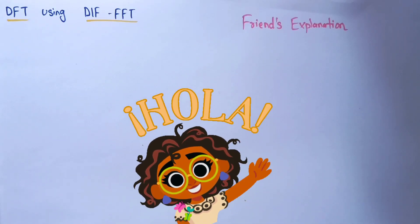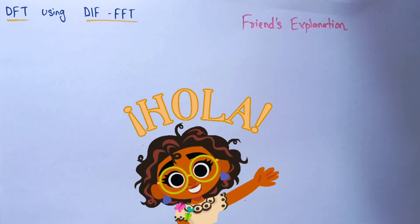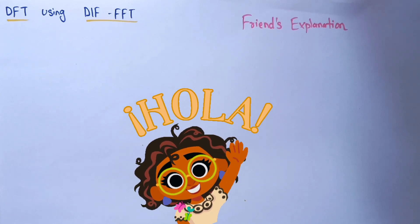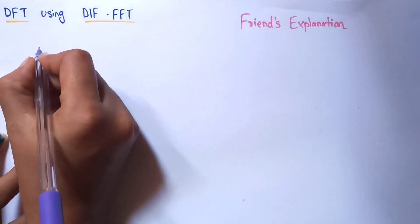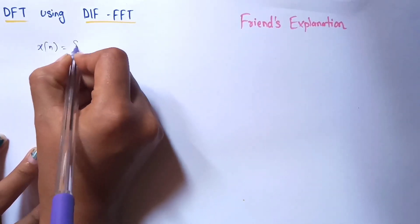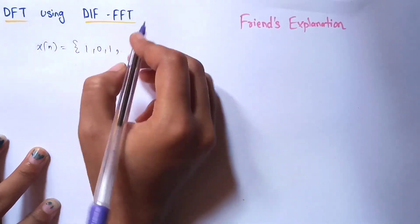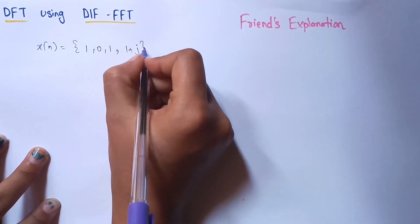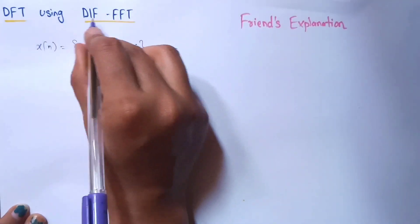Welcome back to the channel. In this video we are going to discuss discrete Fourier transform using DIF, that is decimation in frequency fast Fourier transform. We are going to perform the discrete Fourier transform on a given sequence which is in the time domain. We will consider the same sequence as used in decimation in time FFT, and convert it into frequency domain using decimation in frequency FFT.